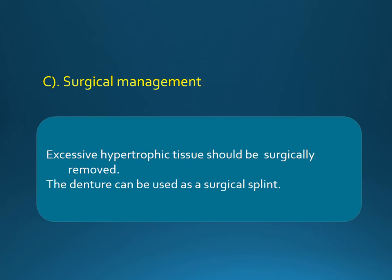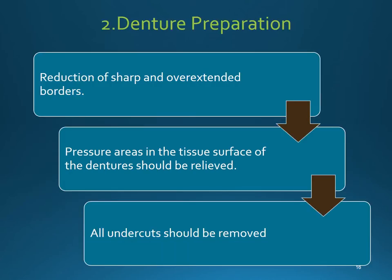Another management option before relining is surgical management: excessive hypertrophic tissue should be surgically removed, and the denture can be used as a surgical splint.